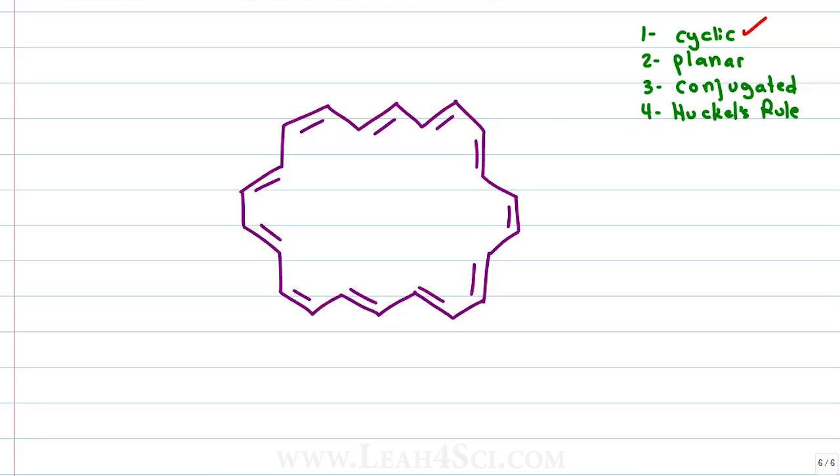Is this molecule planar? Without building it on a model kit, recognize that every single carbon atom has one pi bond, no charges. That means they're sp2 hybridized and if they're all sp2 hybridized, the molecule is planar.